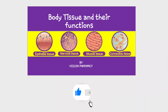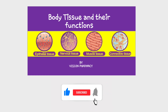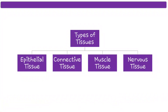Hello dear students, welcome to this video. In today's video, we are going to talk about body tissues and their functions. Our body basically has four different types of tissues: epithelial tissue, connective tissue, muscle tissue, and nervous tissue. We will talk about each one in detail along with their functions.